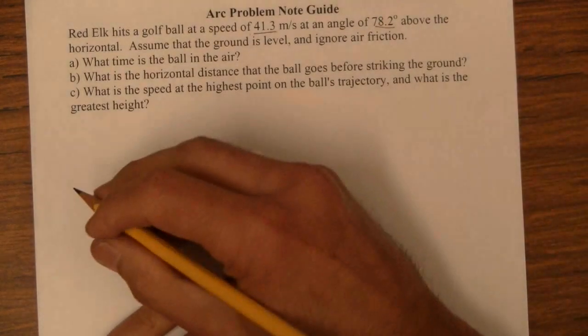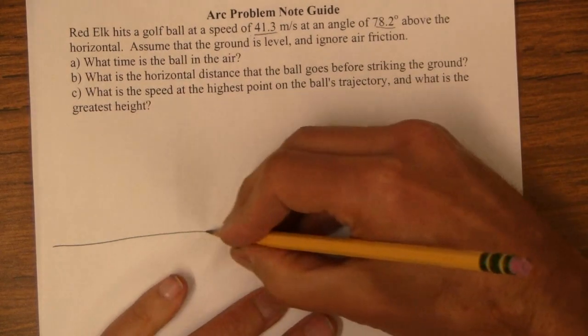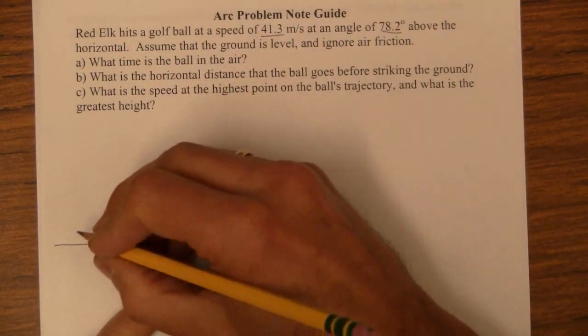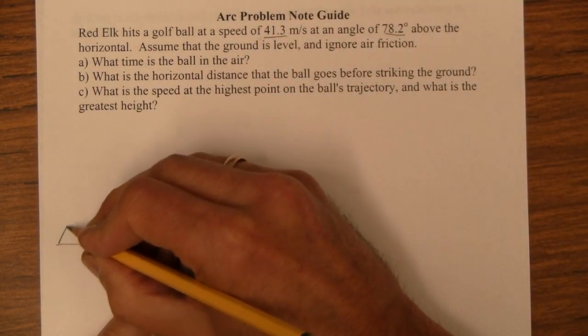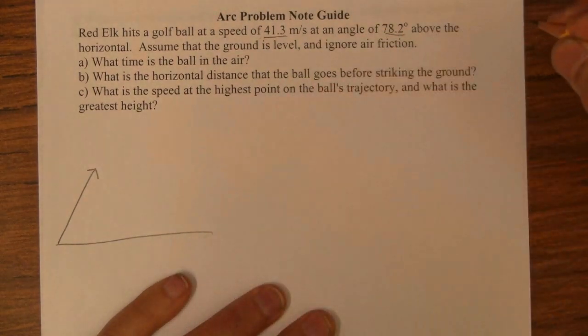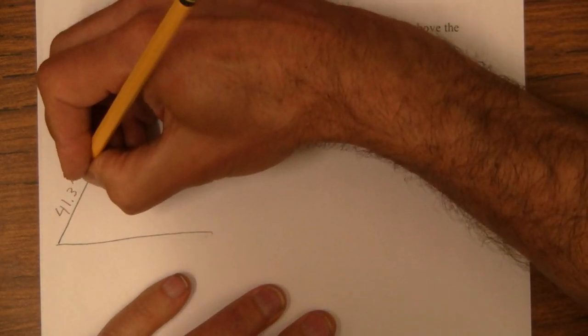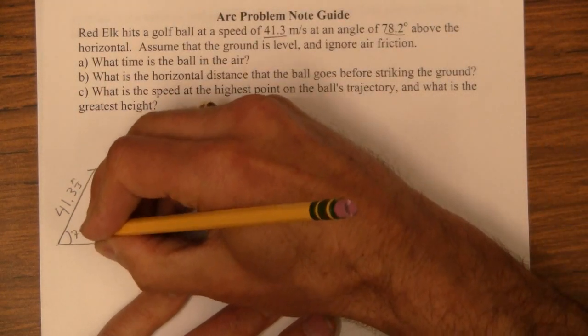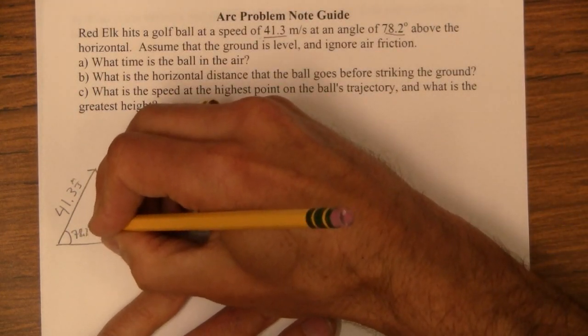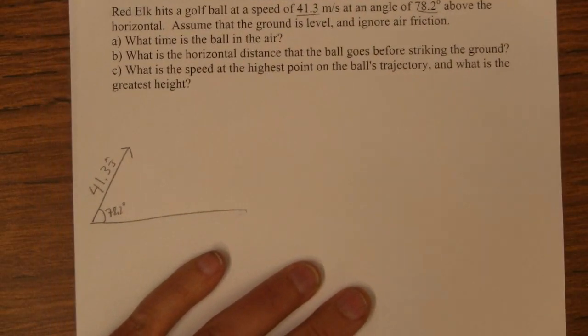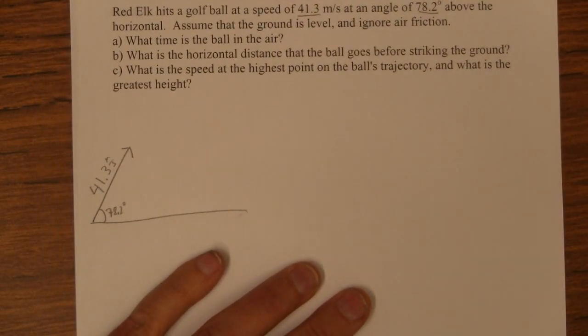So what's going to happen here is Red Elk is going to launch this thing with some initial velocity here. So that's 41.3, and then this angle here is 78.2 degrees. Looks like we have three sig figs there.